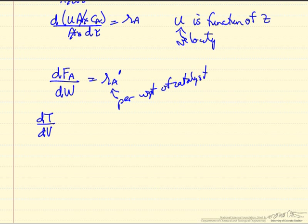And so we would in general have a series, derivative of temperature, say with respect to volume or respect to Z, derivative of cooling temperature with respect to volume or Z, molar flow rate of A and molar flow rate of B and C, and in general the change in pressure with volume.